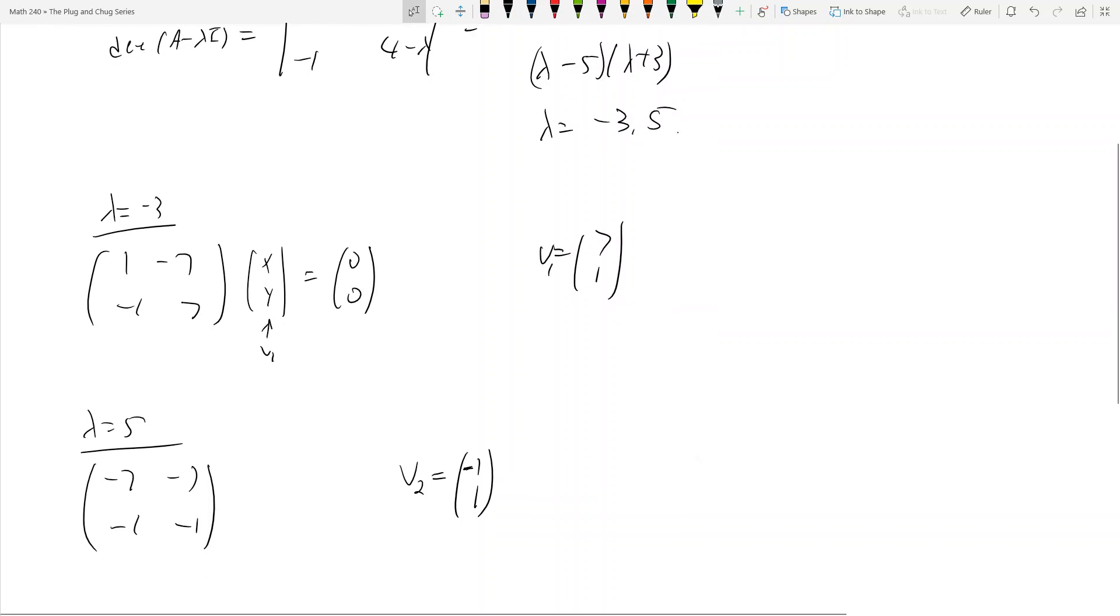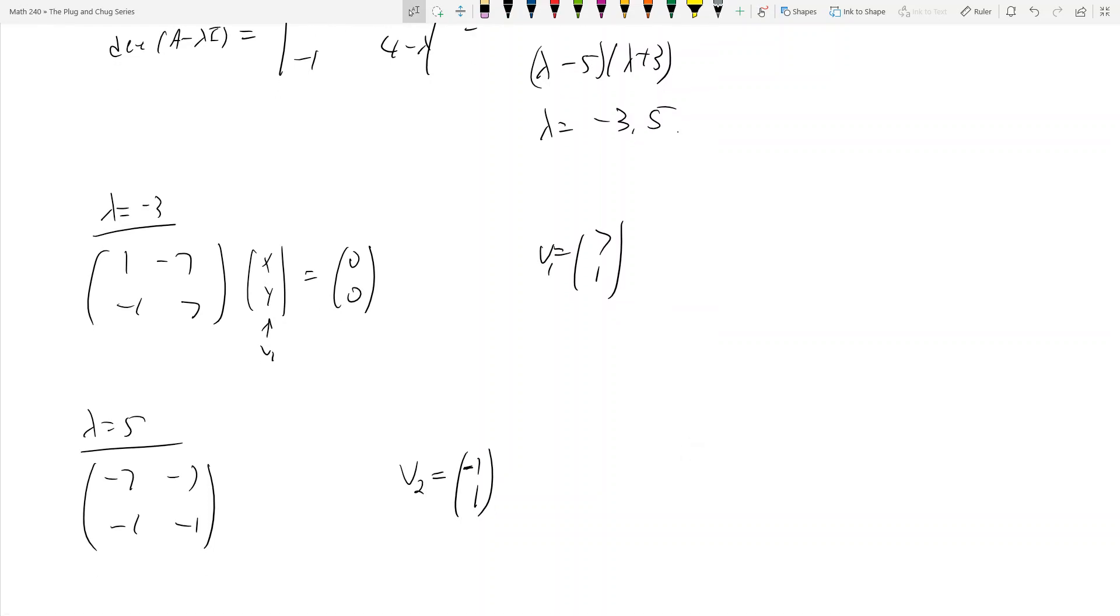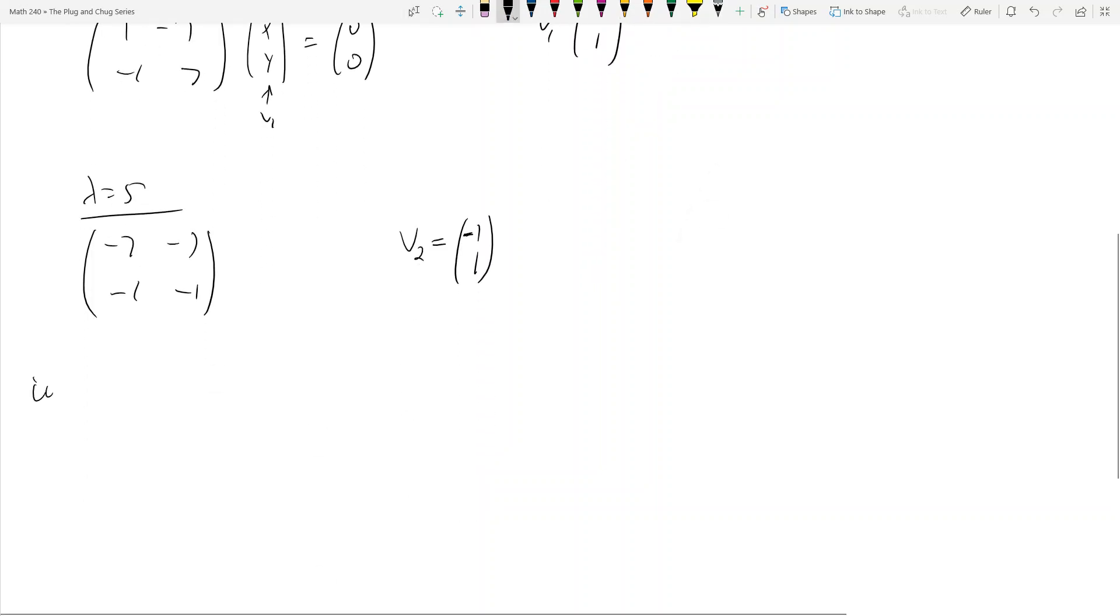Alright, so what does that mean? This eigenvector corresponds to the eigenvalue λ = -3. The last step is to put them together into a solution to the system. How do I do that?